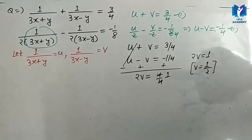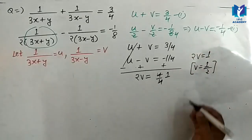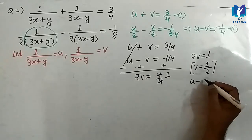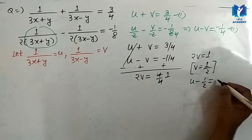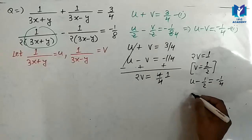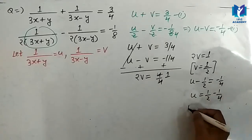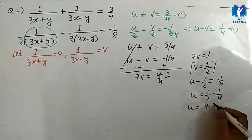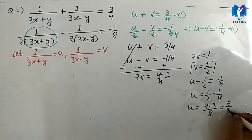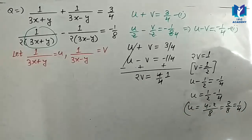v की value जैसी 1 by 2 होगी, put it in any equation. बच second equation में इसे डाल देता हूं. So, v की value 1 by 2 and minus 1 upon 4. Then यहाँ आएगा, 1 by 2 minus 1 upon 4. So, u की value आएगा 2 upon 8 minus 1 upon 4, which is 1 upon 4. और u की value मेरे पास 1 upon 4 आएगी.